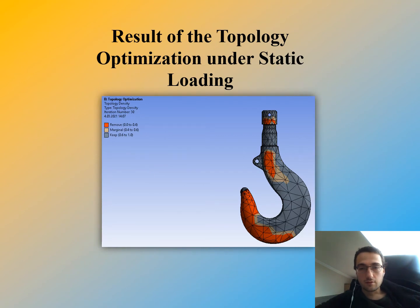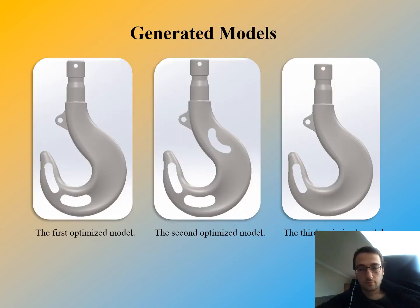The result of the topology optimization under static loading is shown here. We can see red areas — these are the removed ones. According to this result, we created three different models: the first optimized, the second optimized, and the third optimized models.